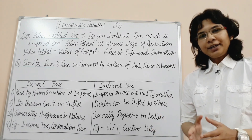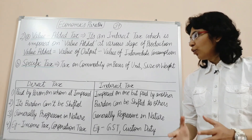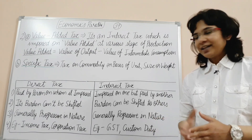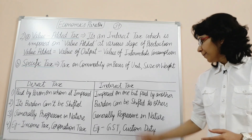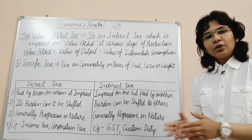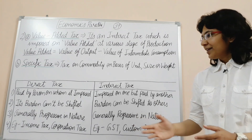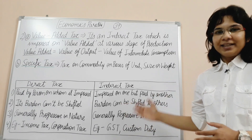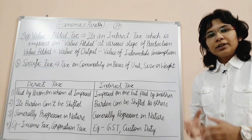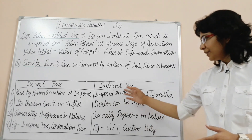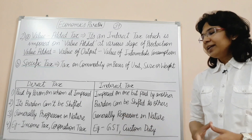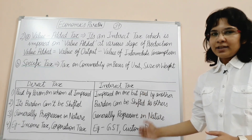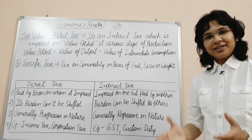The last type is direct and indirect tax. A direct tax is paid by the person on whom it is imposed. An indirect tax is imposed on one person but paid by another. Direct tax cannot have its burden shifted, while indirect tax can be shifted. Direct tax is generally progressive in nature, while indirect tax is regressive. Examples of direct tax include income tax and corporate profit tax. Examples of indirect tax include GST and customs duty. Friends, please like, share, and subscribe.